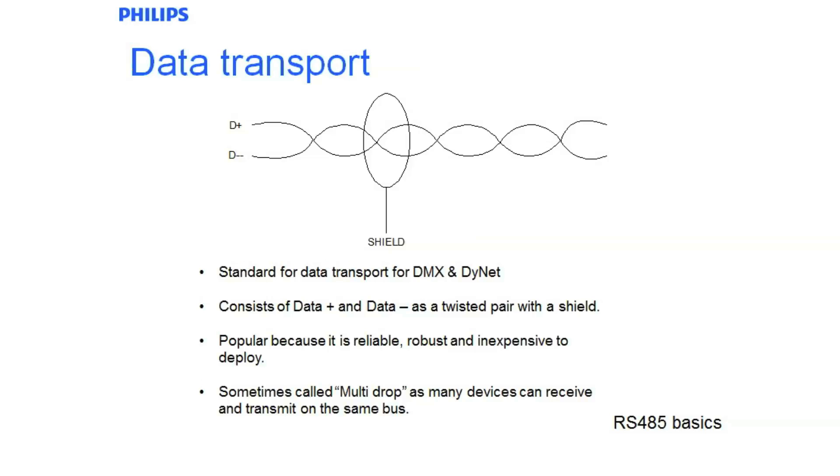Standard data lighting that implements RS-485 protocol is DMX-512 and Dynet. It consists of a data plus and data minus cable, twisted together as a pair with an overall shield. It's very popular, as it is very reliable and robust, and inexpensive to deploy.